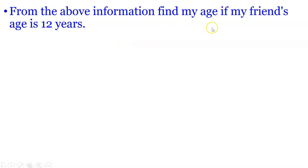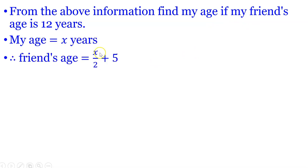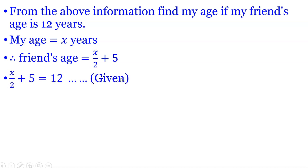Find my age if my friend's age is 12 years. My age is x years, therefore my friend's age is x upon 2 plus 5. This is the condition. Therefore x upon 2 plus 5 is equal to 12. This is given.